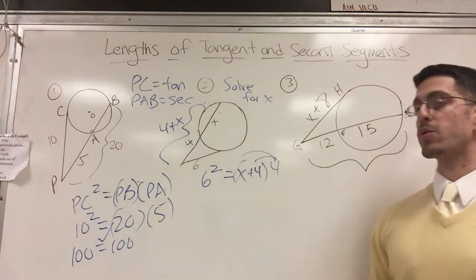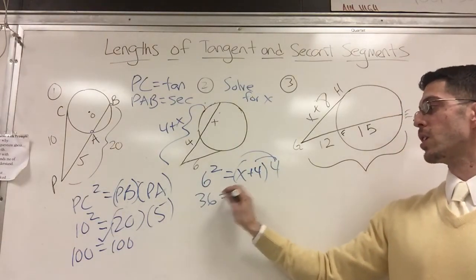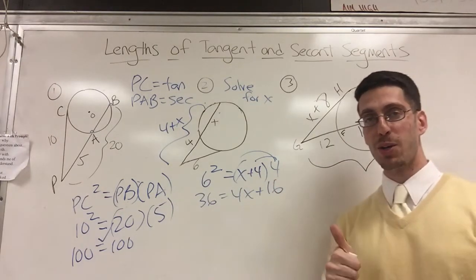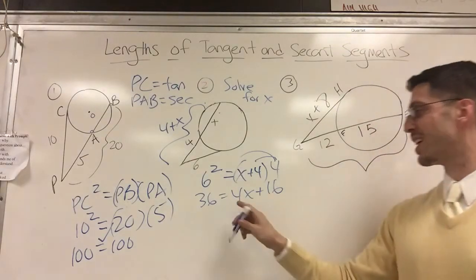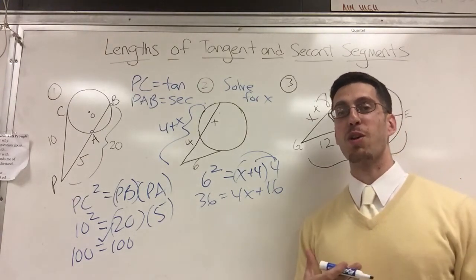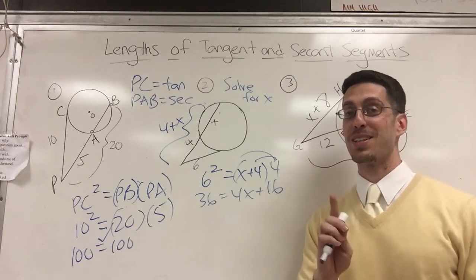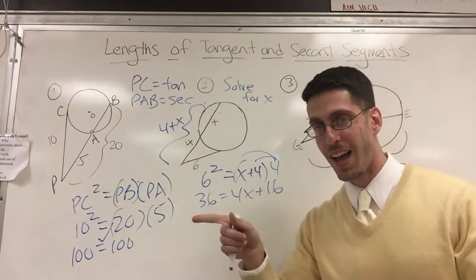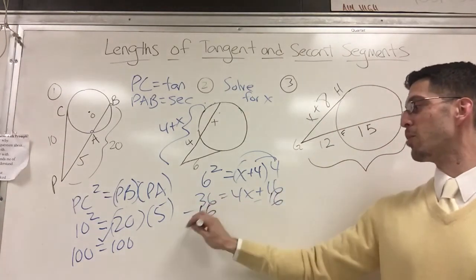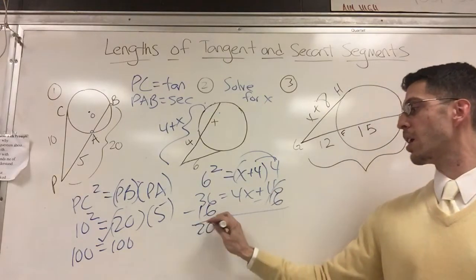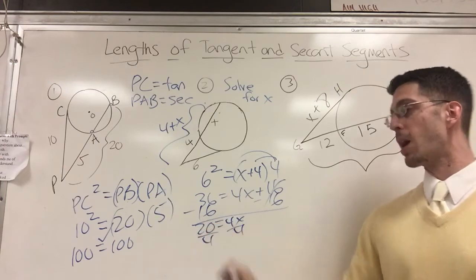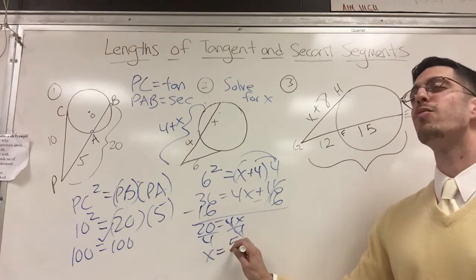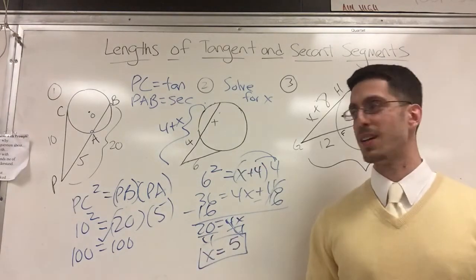Times the external segment which is 4. Now I want to solve for x, so I'm going to use my favorite property which is the distributive property. 6 squared is 36 equals 4x plus 16. I want to get x alone. Since it's sweater Fridays, I'm going to share a joke that a student told me: if you want to get x alone, buy it a drink. So I'm going to subtract 16 on both sides. 36 minus 16 is 20, 20 equals 4x, and if I remember my math, then 20 divided by 4, x equals 5.